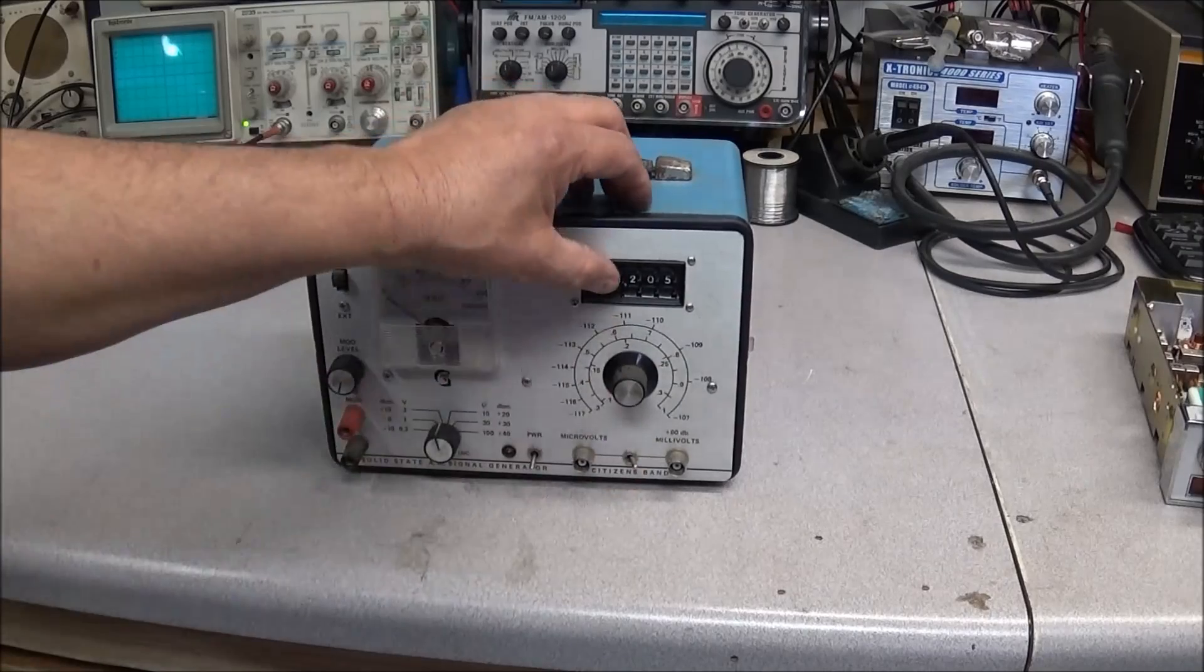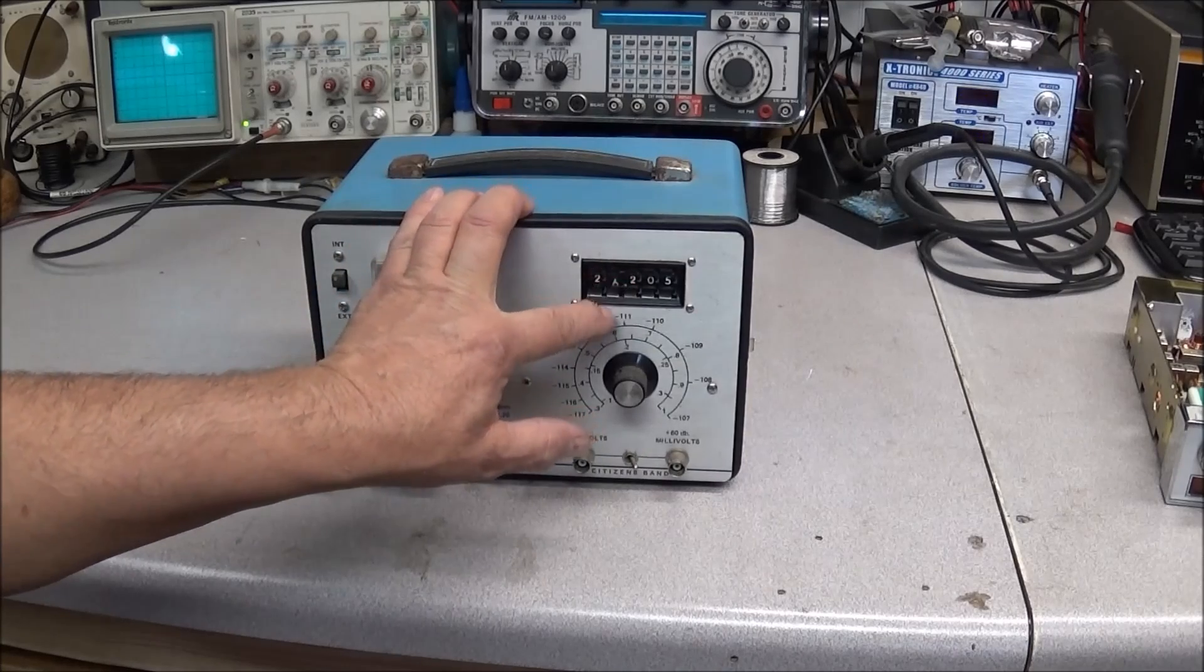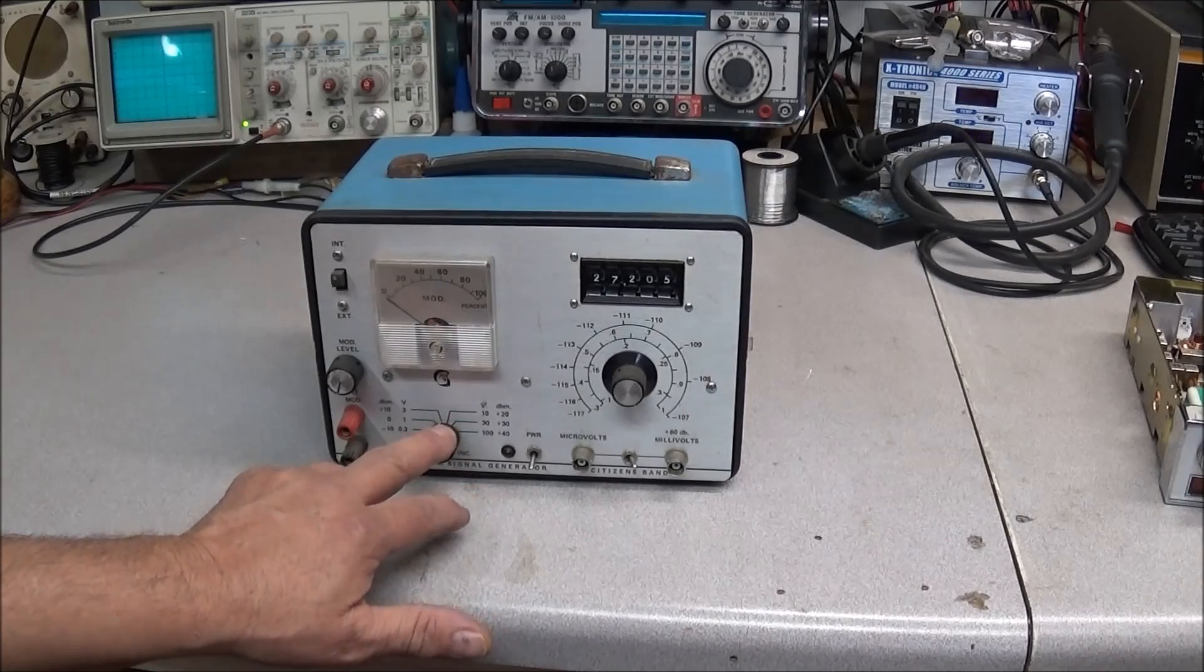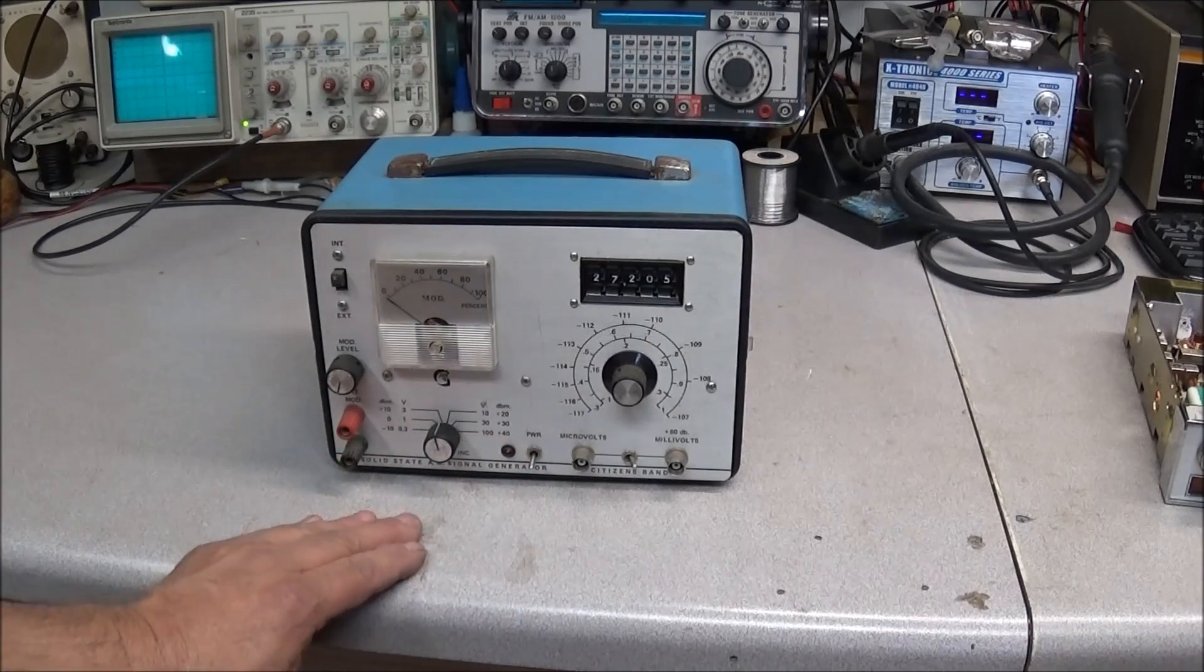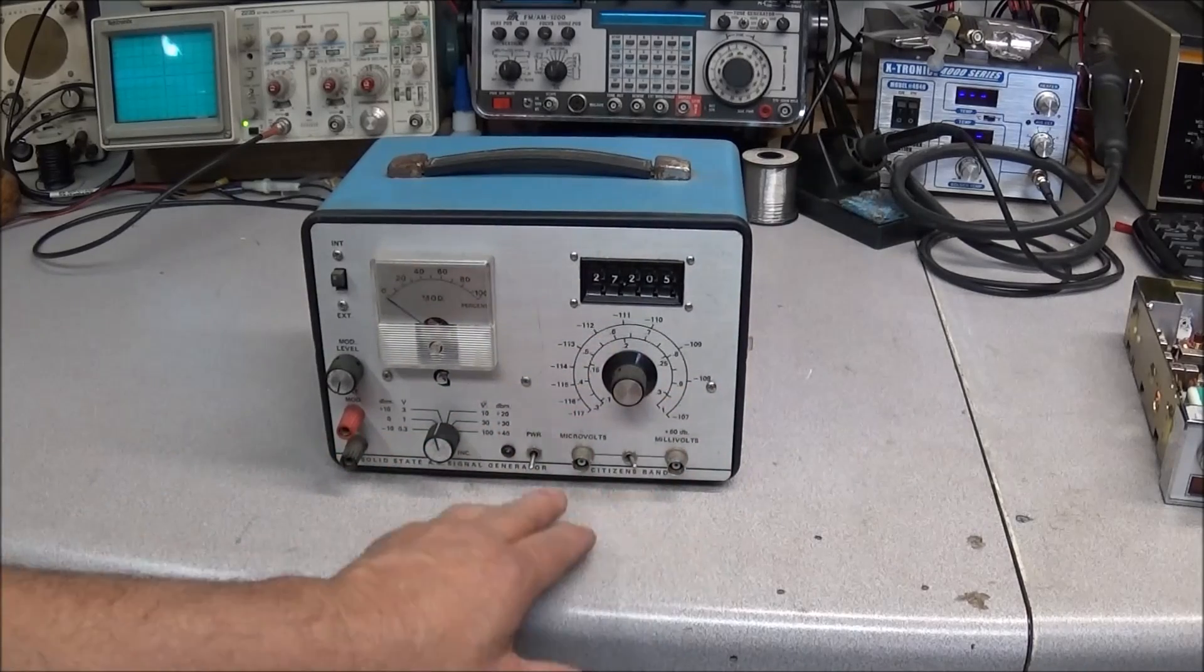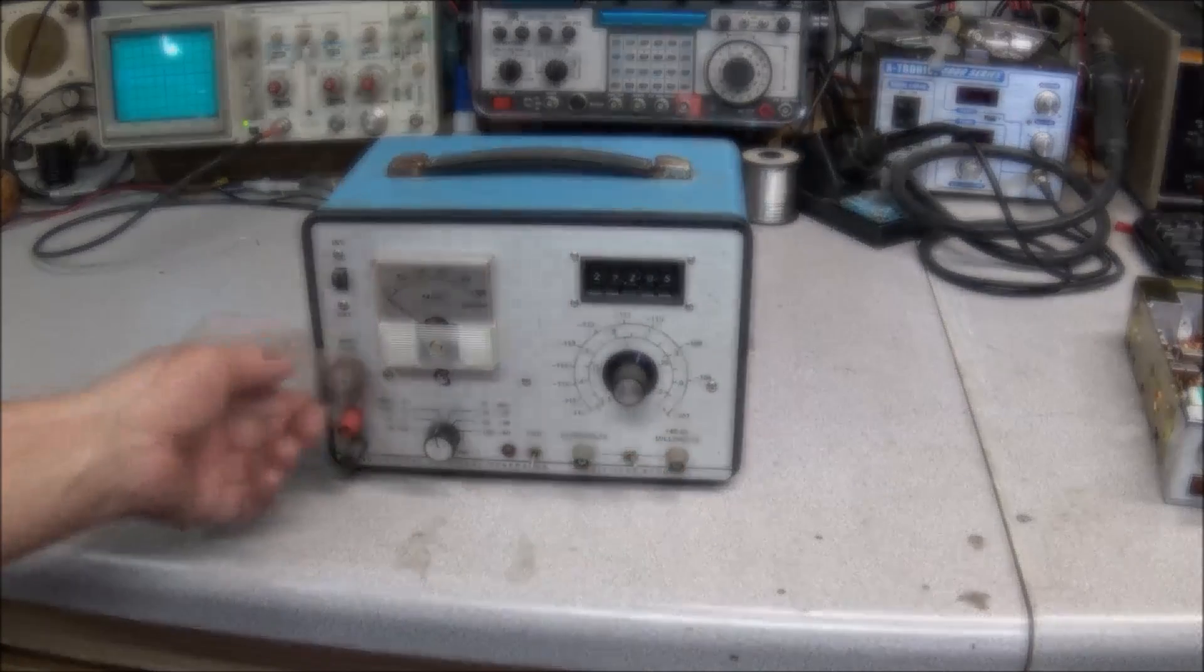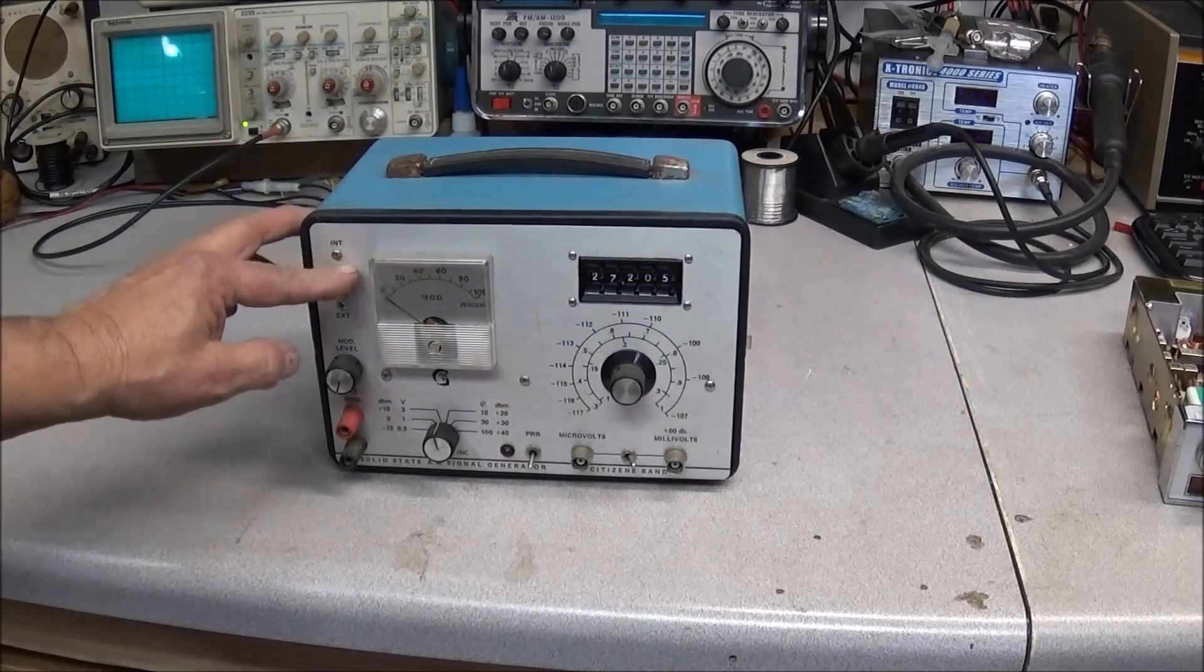It's made by a company called Gall Incorporated. It's the model 1500 and it's just a basic CB signal generator. It uses the thumb wheels to set the frequency. The 2 is stationary and the second digit goes from 6 and 7. So it covers 26.965 to 27.405 megahertz. Attenuation starts at 0.3 microvolts all the way up to 100 microvolts. And then you got your fine knob for your output. It has a selectable switch for your RF output in microvolts or millivolts. It also has a built-in modulation adjustment and the meter for your modulation percentage. And you can go external modulation if needed.